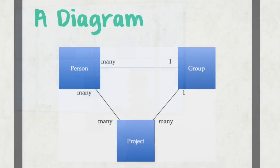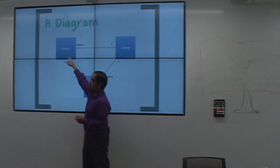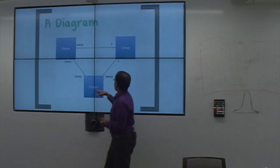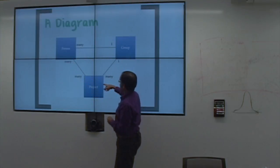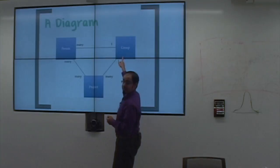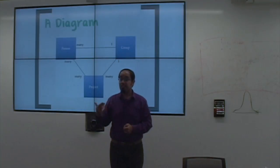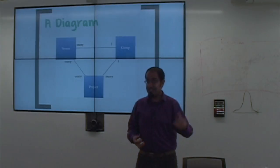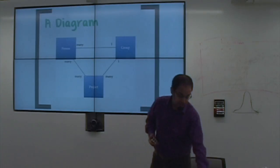Then you move to a diagram where you say: I've got my objects, and I'm drawing lines between them to indicate how they're connected. You read this by saying that a group has many people, a person has many projects, a project has many people, and a group has many projects. And for the purposes of this example, a project has one group. That's how you read the simplest version of this diagram. Once you've got the right objects defined and the right relations defined, then you do something like that.